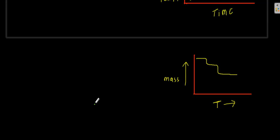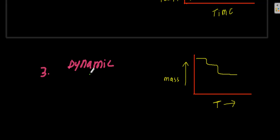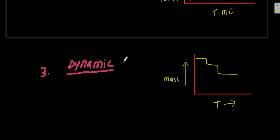Another commonly used thermogravimetric technique is dynamic thermogravimetry. In dynamic thermogravimetry, the temperature is changing — preferably at a linear rate — and the mass loss as a function of this temperature change is studied. This is the most commonly used technique, so from this point onward we will focus on dynamic thermogravimetry.